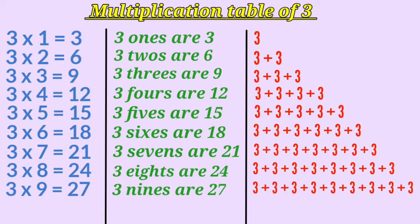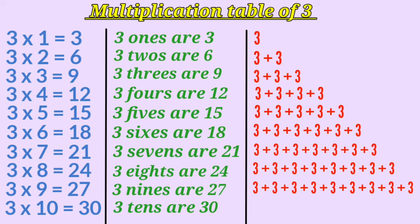3 multiplied by 10 is 30, or 3 tens are 30. Here we are adding 3 ten times.